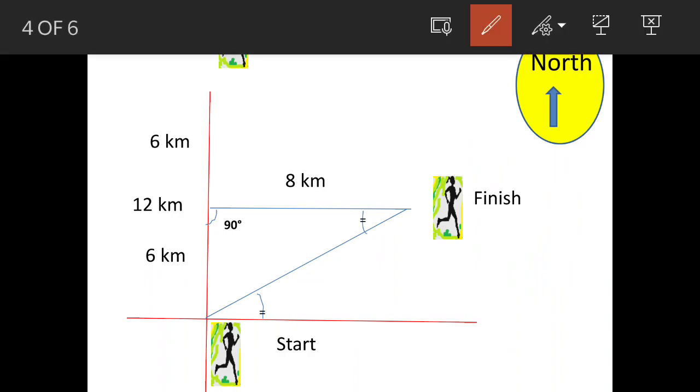If you see the way she has run, she has gone 12 kilometers up to here and came back by 6 kilometers. This becomes 6 kilometers and this is 8 kilometers. This was her destination. So this is forming a triangle actually with respect to start point.